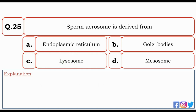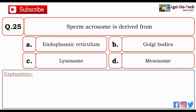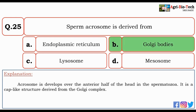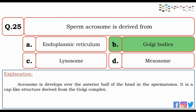Next question: sperm acrosome is derived from — endoplasmic reticulum, Golgi bodies, lysosome, or mesosome? The correct option is B — Golgi bodies. The acrosome is developed over the anterior half of the head in the spermatozoon. It is a cap-like structure derived from the Golgi complex.